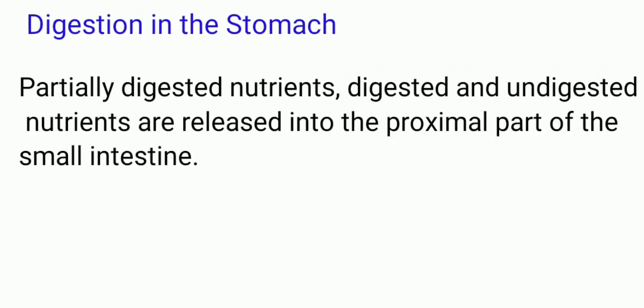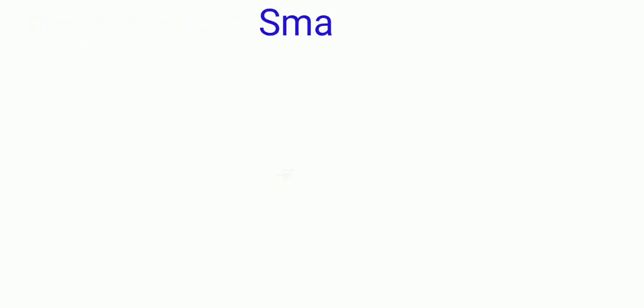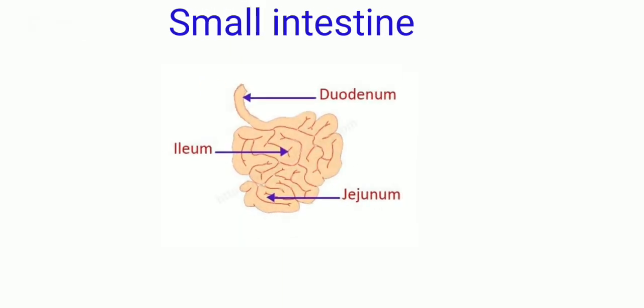After the action of the gastric juice, the partially digested proteins, digested and undigested carbohydrates, undigested lipids, water, minerals, and vitamins are released into the front part of the small intestine. The small intestine has three parts: duodenum, jejunum, and ileum.